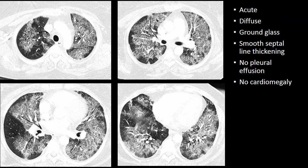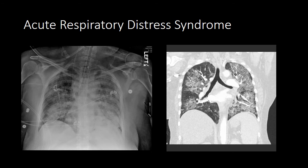This process — just to start introducing some terms — was an acute process. I'm calling it diffuse in terms of its pattern. It has ground glass opacity and smooth septal line thickening, things we'll learn about in future podcasts. We see no pleural effusions and no cardiomegaly. This person had acute respiratory distress syndrome, which is often a diffuse process characterized by non-cardiogenic pulmonary edema.